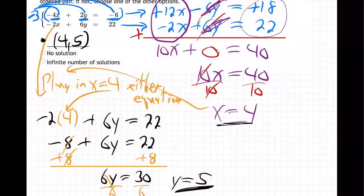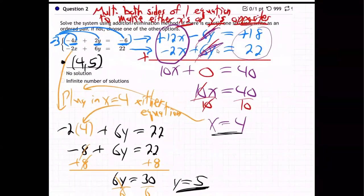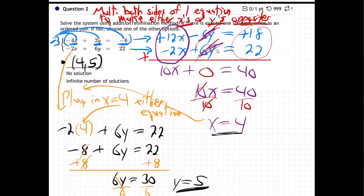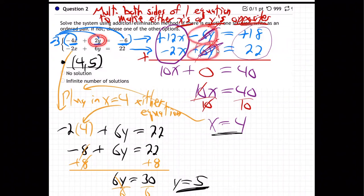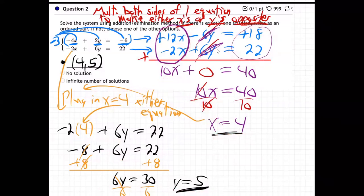So the answer is (4, 5). To recap: multiply both sides of one of the equations to make either the x's or y's opposites. I multiplied the top equation by negative 3 to make the y terms opposites, so they eliminated when added. That left only x to solve for, then I plugged x equals 4 back into an equation to find y equals 5.